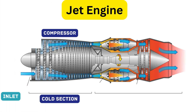The compressor is the middle section. After air goes through the fan, it enters the compressor, which consists of multiple spinning blades and stationary blades. These blades squeeze the air tighter and tighter, raising both its pressure and temperature. The goal: make the air dense and ready to combust efficiently.